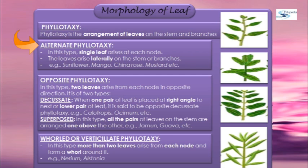Examples of alternate phyllotaxy include sunflower, mango, china rose, mustard, etc.